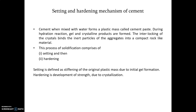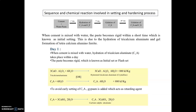Let us discuss the chemistry behind both the gelation process and the crystallization process. Here we have highlighted the sequence of chemical reactions involved in the setting and hardening process. Initially, water and cement are mixed to form paste. After one day, hydration of tricalcium aluminate and tetracalcium aluminoferrite occurs. At the end of day seven, gelation of tricalcium silicate begins. At the end of day 28, gelation of dicalcium silicate and tricalcium silicate occurs.